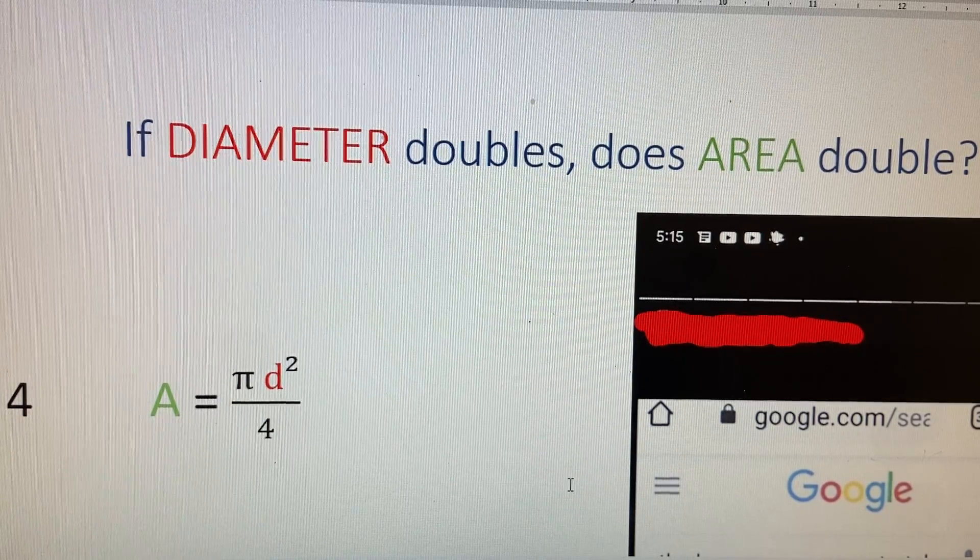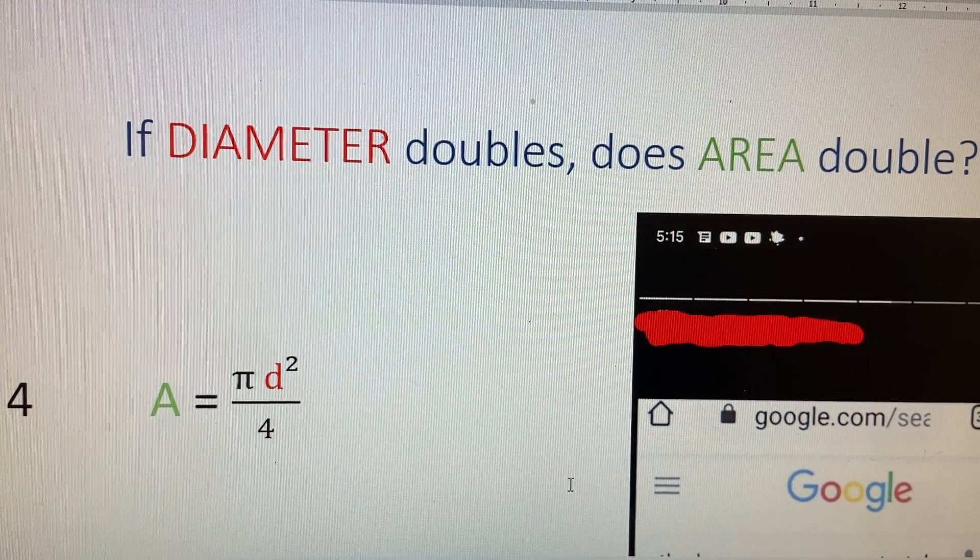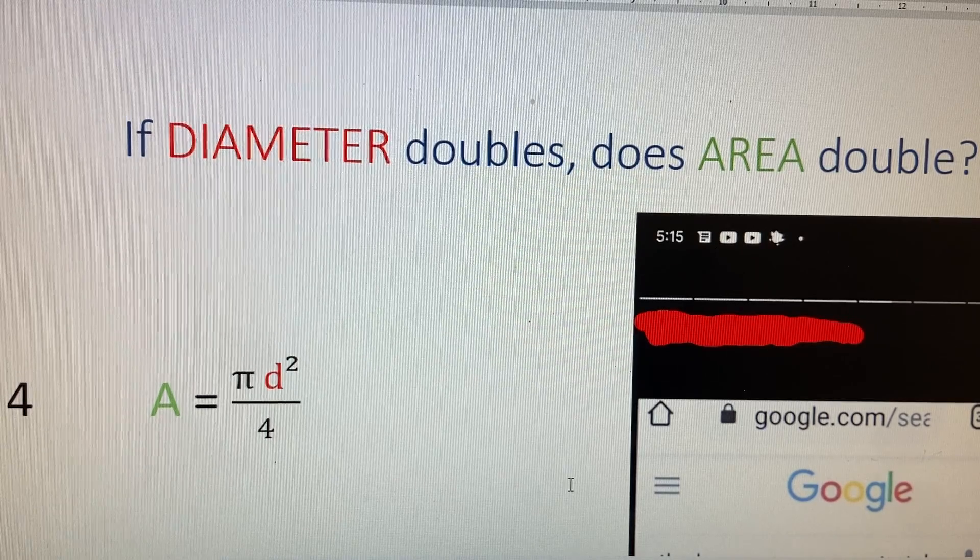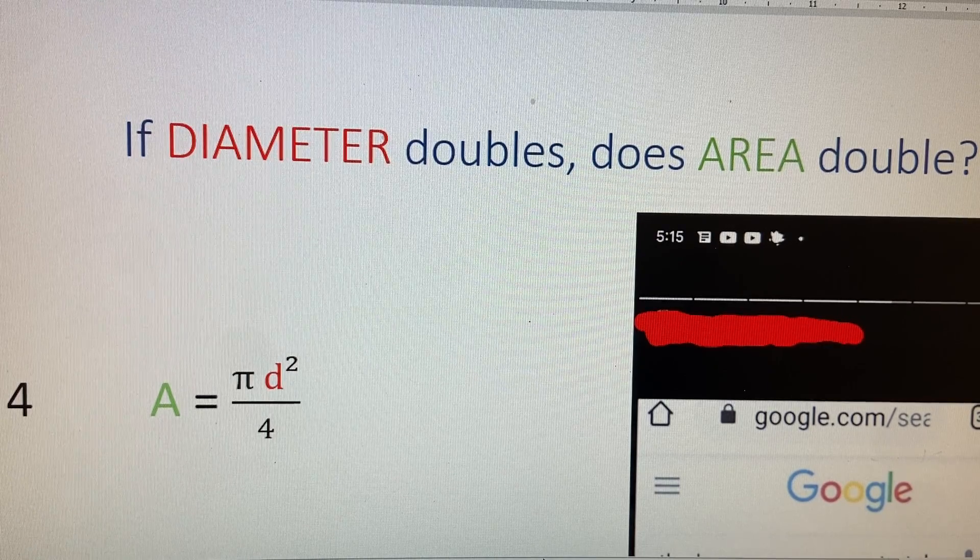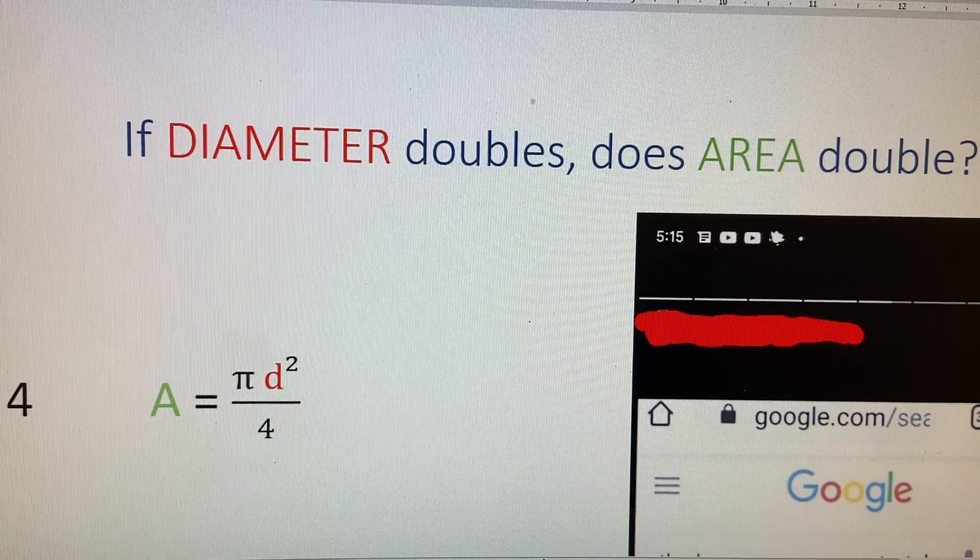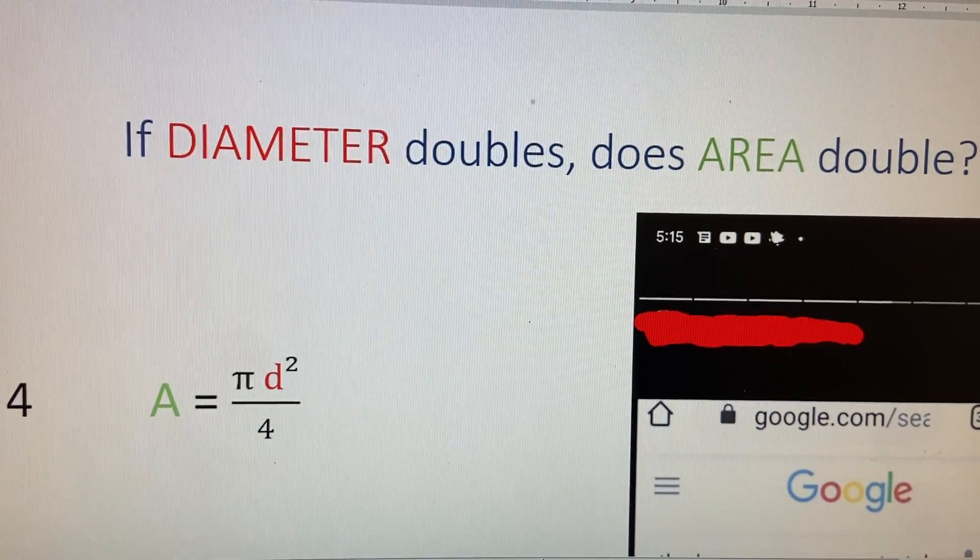It sounds logical after all. You double one thing, you double the other. No? Unfortunately it's incorrect. In this video I'll show you and explain what happens to the area when the diameter of a circle gets doubled.